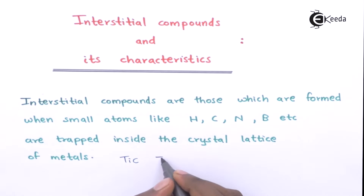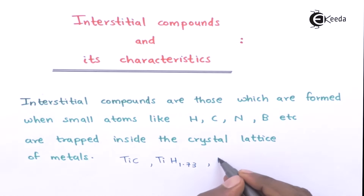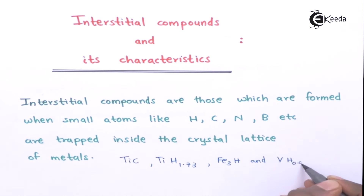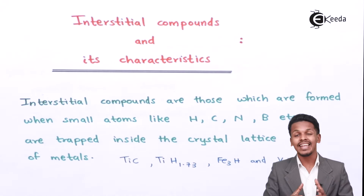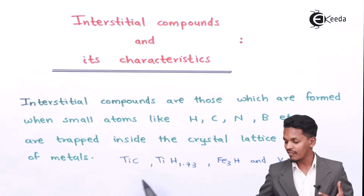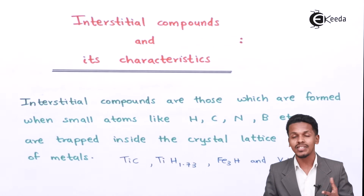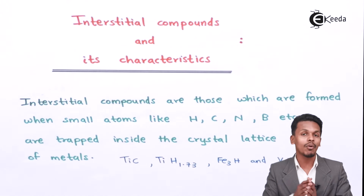Other examples include titanium hydride where hydrogen content is 1.73, and Fe₃H in which hydrogen is present at 0.56. As you can observe, the combination of elements here is in a non-stoichiometric way, meaning these are impurities — carbon, hydrogen, boron, nitrogen — that acquire space in the crystal lattice.